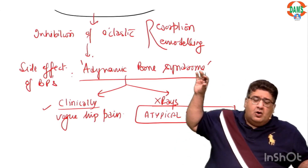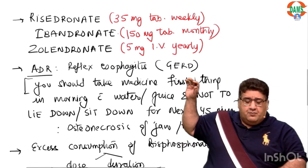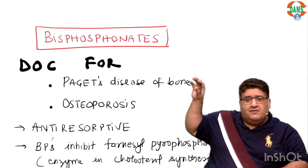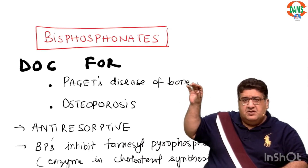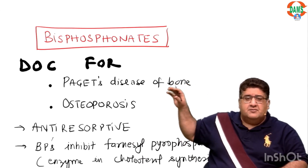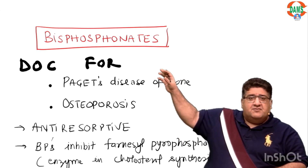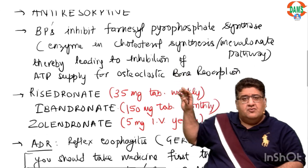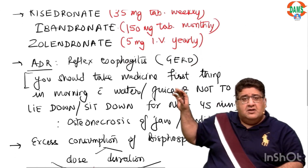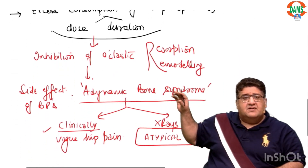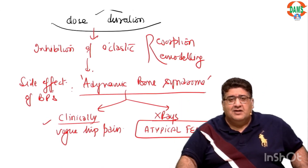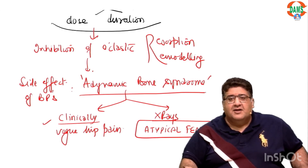I hope everyone has understood this important topic of orthopedic pharmacology — important not only for UG and PG aspirants in orthopedics, but also for the general public. Bisphosphonates are important for two conditions, but primarily used in osteoporosis. These are the drugs, the side effects, and the side effects due to excess consumption. Thank you so much. Stay tuned, and please like, share, and subscribe the channel.